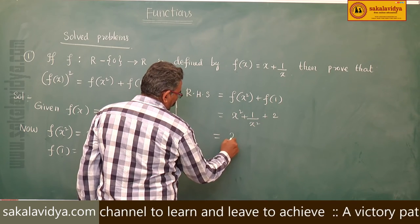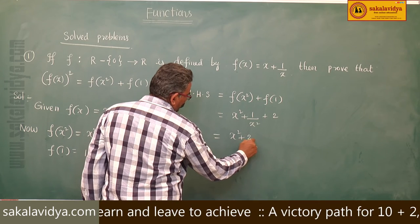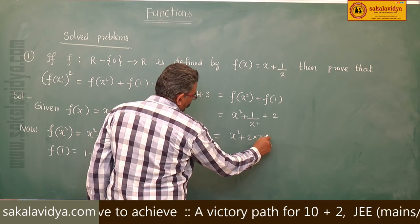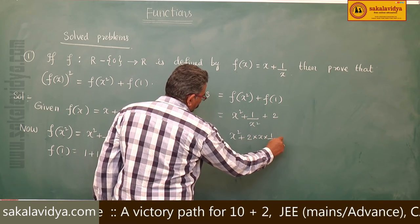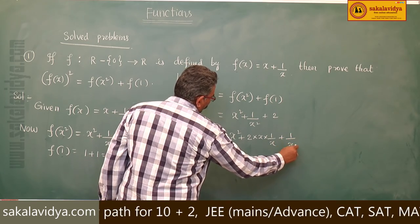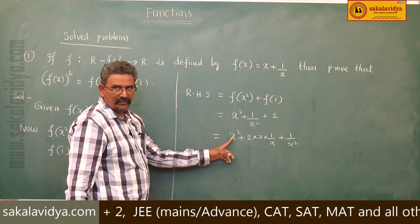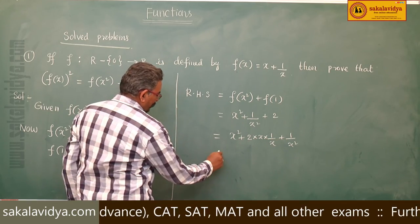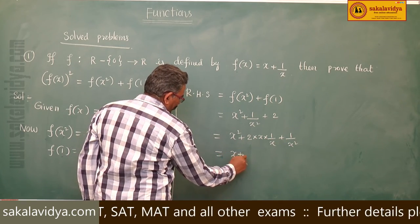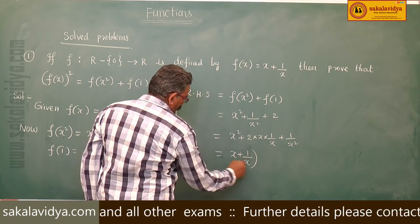So this can be written x² + 2·x·(1/x) + 1/x². This is in the form of a² + 2ab + b². This is nothing but (x + 1/x)².